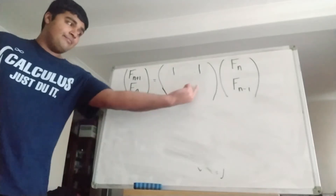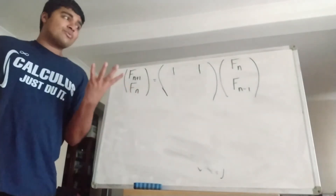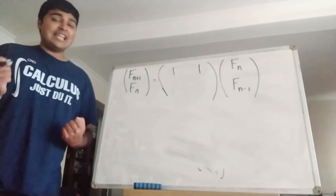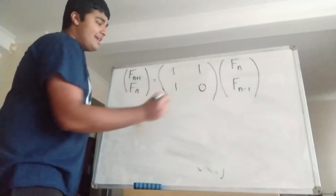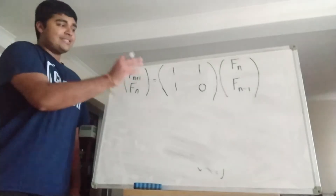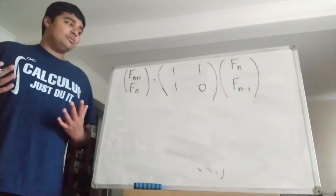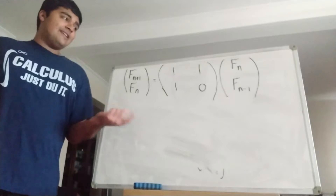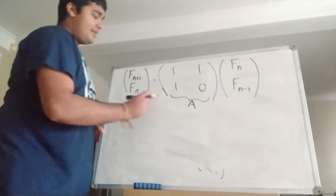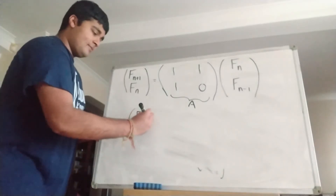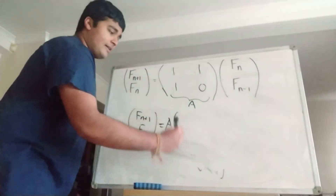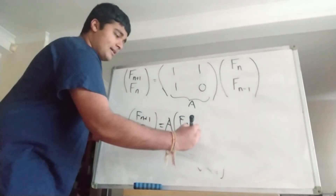Now let's worry about our second row. We have Fn and we want to write it as a linear combination of Fn and Fn minus 1. But obviously Fn is just Fn, so I can just put a 1 here and a 0 here. That will give me Fn equals 1 times Fn plus 0 times Fn minus 1. So this matrix equation now holds true. We have the vector Fn plus 1, Fn equal to this matrix here, which I'm just going to denote with A for now. So we have Fn plus 1, Fn is equal to A times Fn, Fn minus 1.